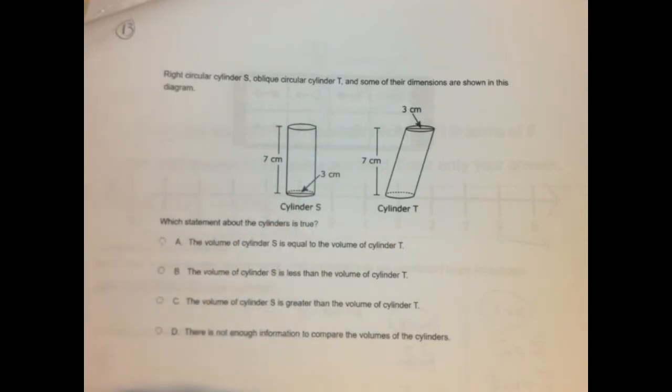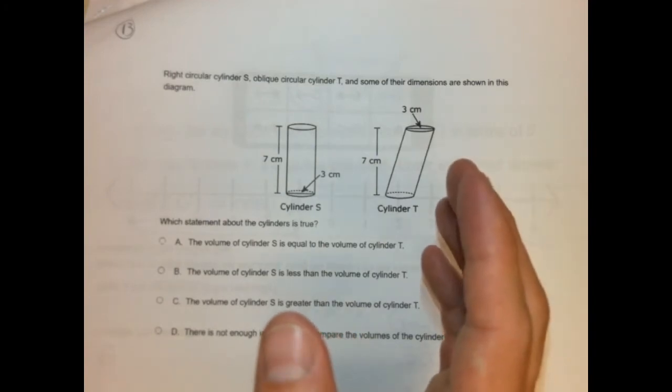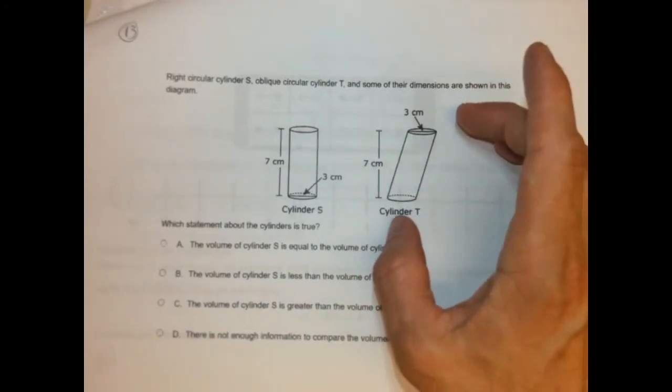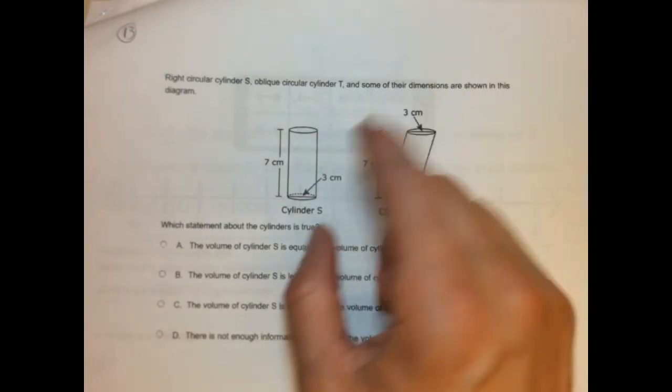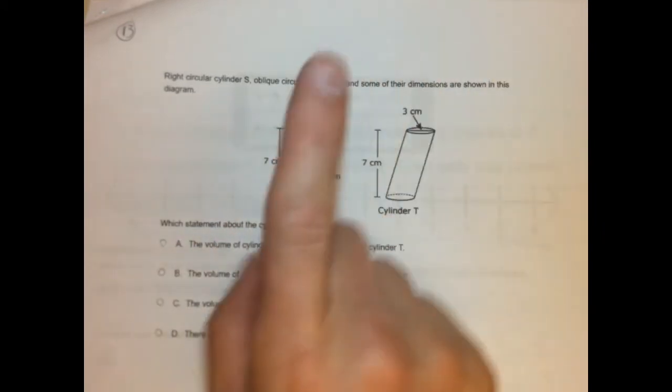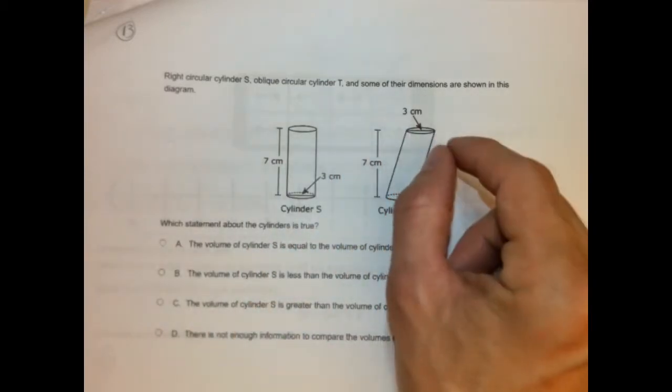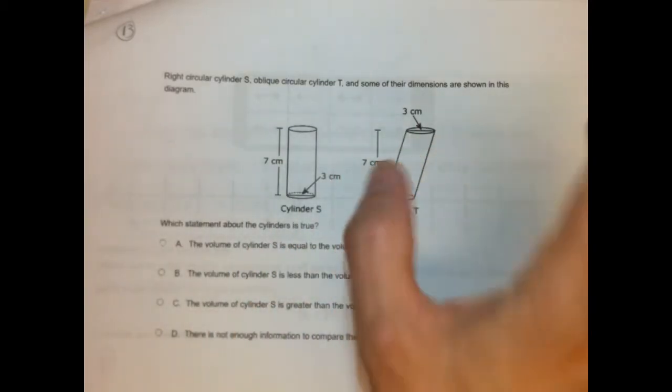What statement about these cylinders is true. So I'm going to make this real simple and let you know that if you have a slanted cylinder like this one, it's oblique, but we think of it as slanted honestly when you look at it, and a right circular cylinder, as long as their perpendicular heights and radiuses are the same, they're going to have the same volume.